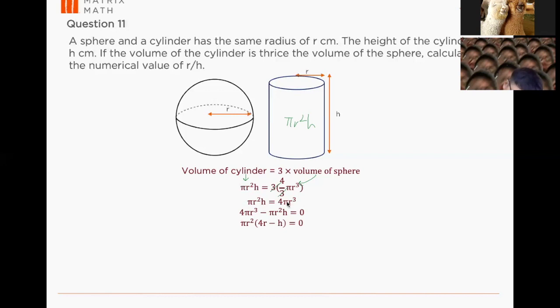So I bring over. So when I bring over, I'm trying to make them into 0. So remember when you learn your quadratic equation, when we factorize, we can actually solve one part. So after I have 4πr³ minus πr²h equals to 0, I factorize because both of them has a common of πr².